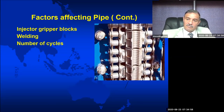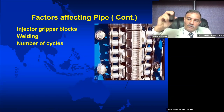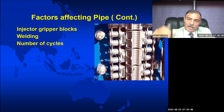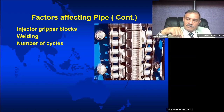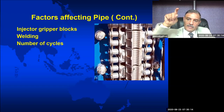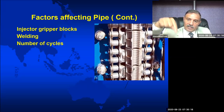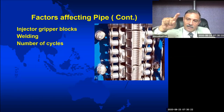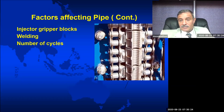There is also the number of cycles — how many times you run in the hole and pull out. Each time you run and pull, there is a bending cycle: the pipe is bent on the reel, comes out straight, then you bend it on the gooseneck, then goes inside the injector straight. This cycle is repeated when you pull out — straight, bend on the gooseneck, then straight, and then bend it back on the reel.